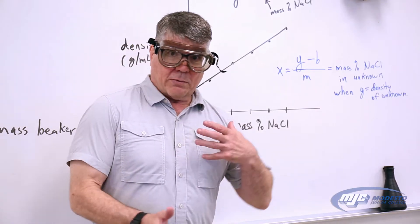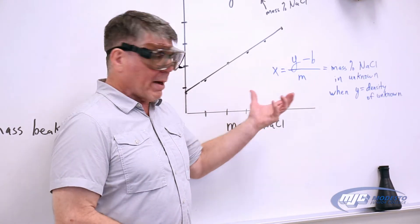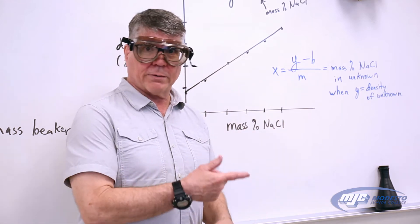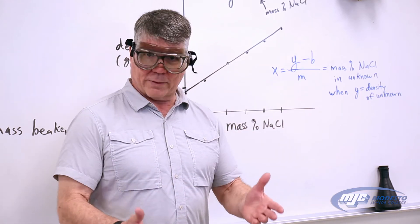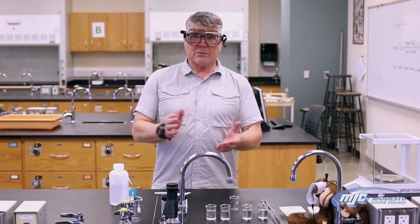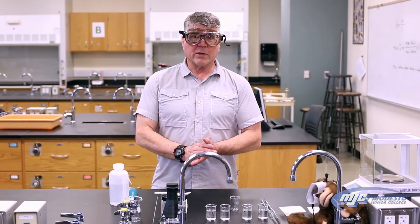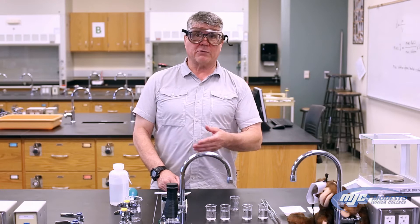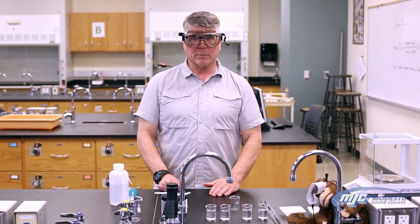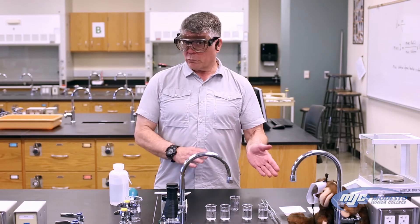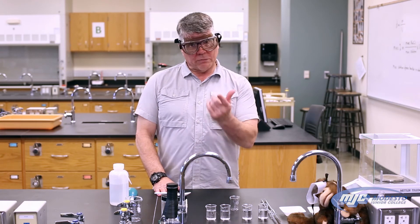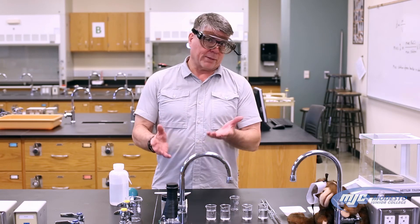All right guys, now that we see how we're going to find the mass percent sodium chloride in our solution, let's go over there and get started on the experiment. The first thing we need to do is make up our series of standards — we're going to make up five standards: solutions one, two, three, four, and five. We're also going to use deionized water as a standard, but we don't have to make that up.